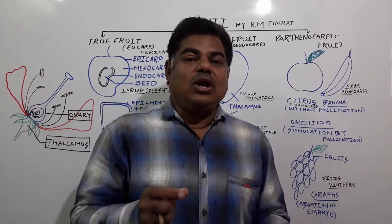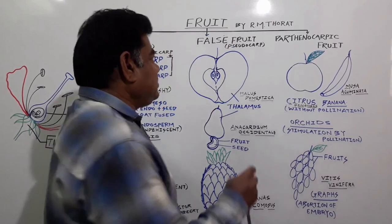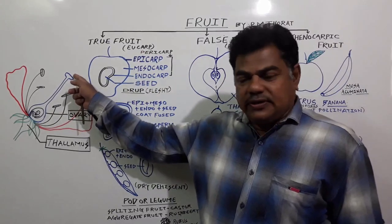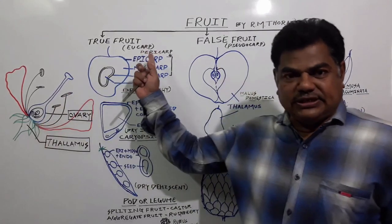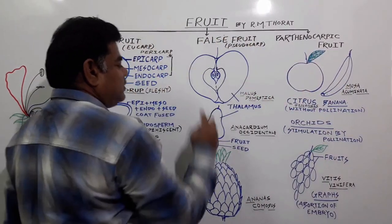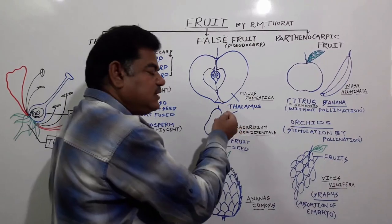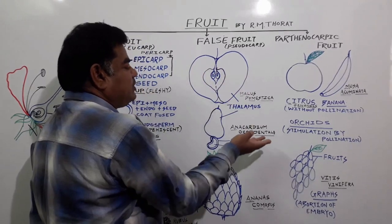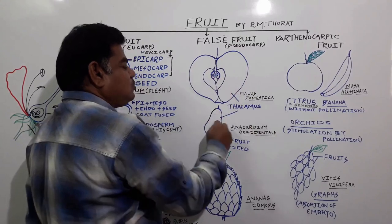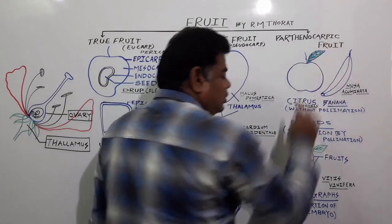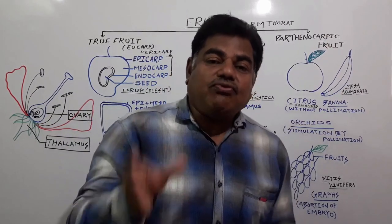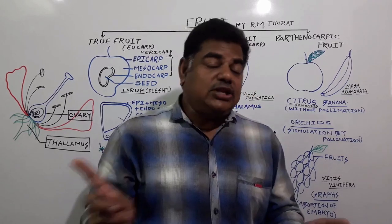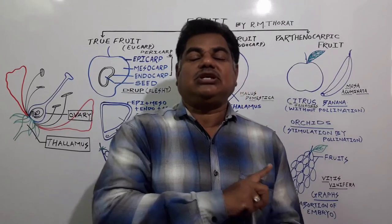In the case of true fruits, pollination takes place, then fertilization, then fruit formation. In the case of false fruits, pollination and fertilization take place, but other floral parts also take part in fruit formation, and seed formation is also there. But in the case of parthenocarpic fruits, without the act of fertilization the ovary gets ripened — there is no pollination, no fertilization, yet fruit formation takes place.